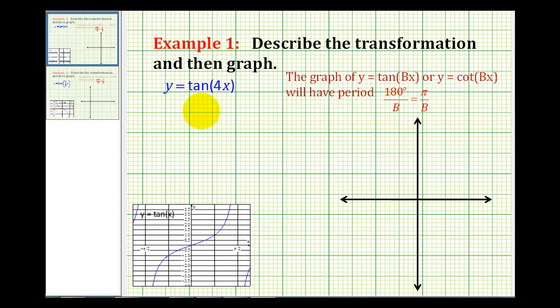Welcome to the first example of describing and then graphing a transformation of the tangent and cotangent functions. Here we have y equals four tangent x.